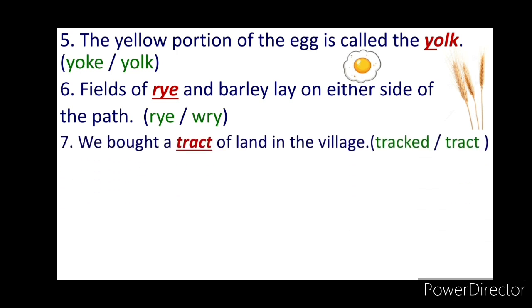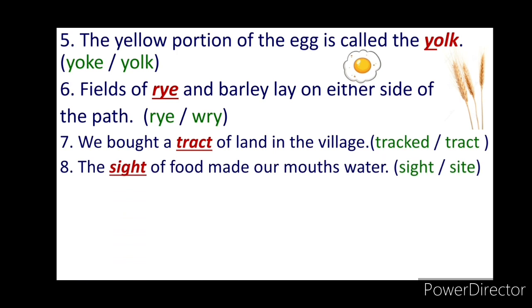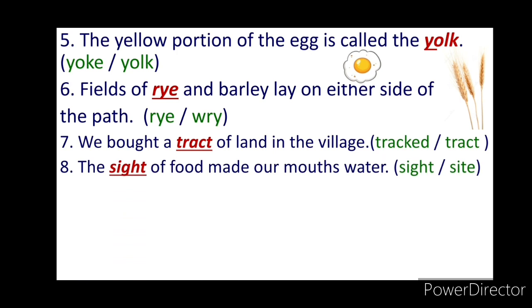Seventh: We bought a tract of land in the village. Tract means an area of large land. Eighth: The sight of food made our mouths water. S-I-G-H-T means the power of seeing, whereas S-I-T-E means an area of ground on which a building or monument is constructed. Thus, the answer will be S-I-G-H-T — the sight of the food.